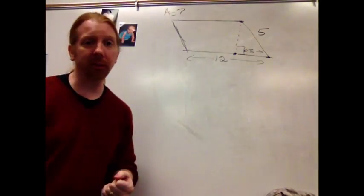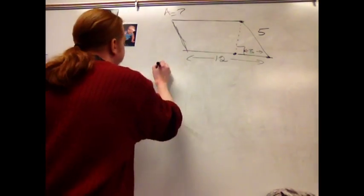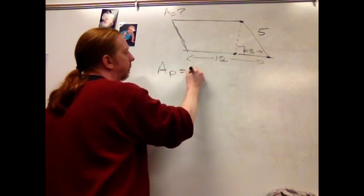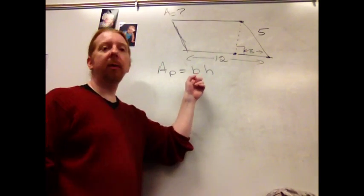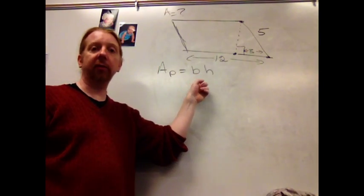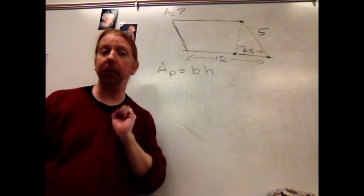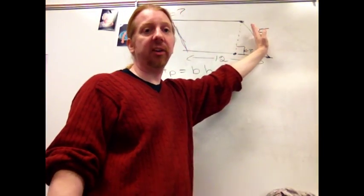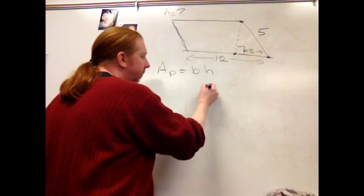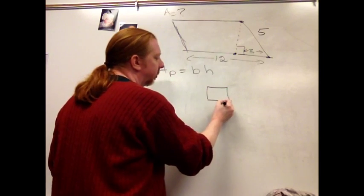Now a common practice that students do here is they take the formula, area of the parallelogram is base times height, and they substitute 12 as the base, 5 as the height. You want to avoid that because remember, this distance here is slanted. This would be taking this rectangle, which is 12 by 5.